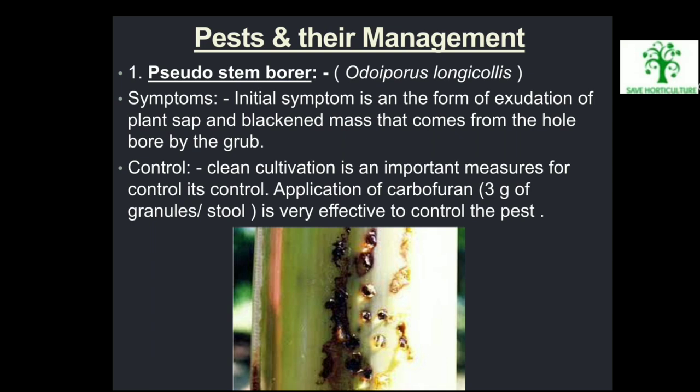Pest Management — Pseudostem Borer (Odoiporus longicollis): Initially, symptoms appear as exudation of plant sap and a blackened mass from the hole bored by the grub. Control: Clean cultivation is an important measure. Application of carbofuran 3 grams of granules per stool is very effective to control the pest. Symptoms of pseudostem borer are visible in the picture.